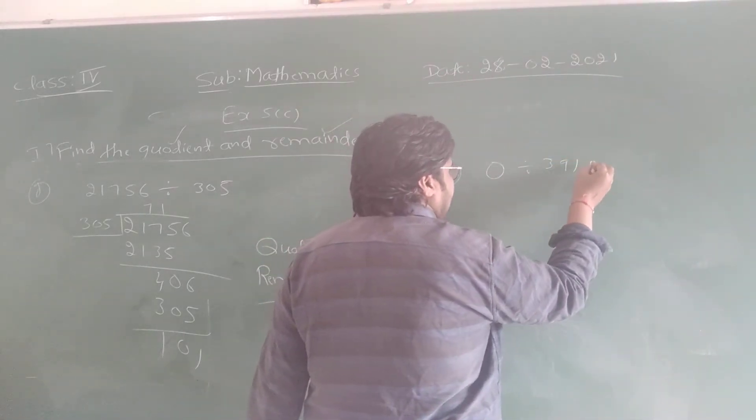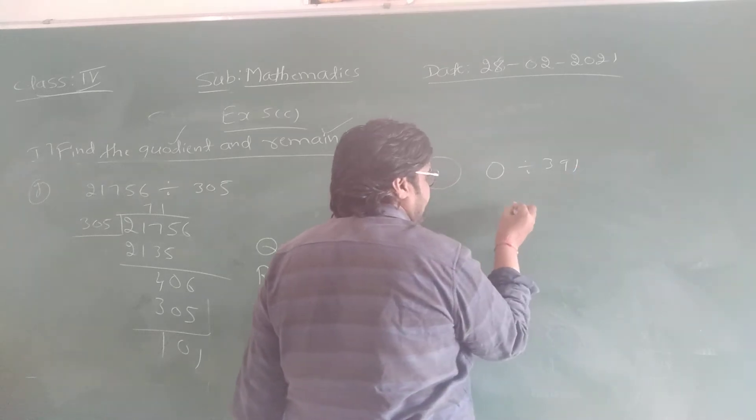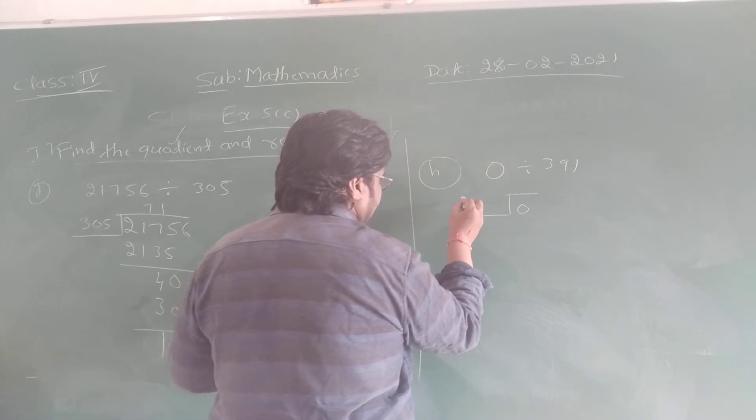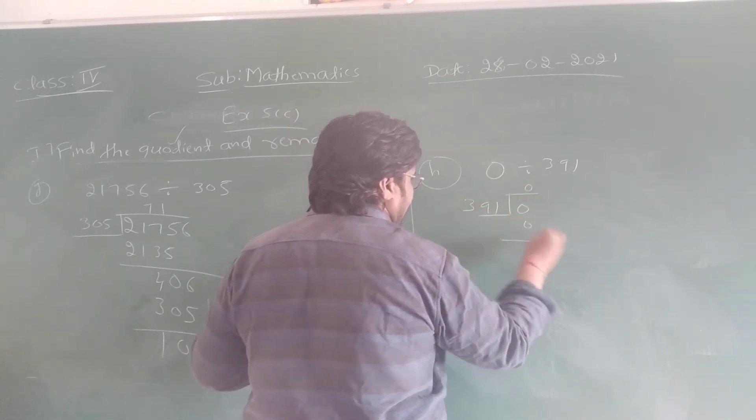Okay. 0 divided by 391, that is 0. We have to divide this by 391. That is 0 itself.